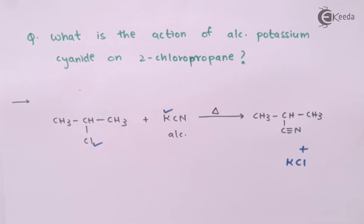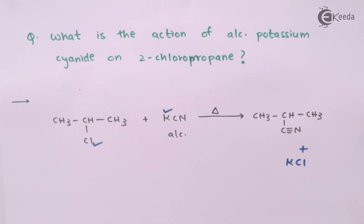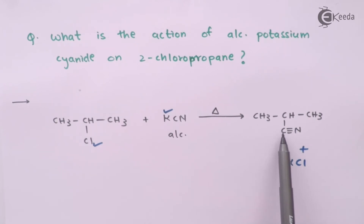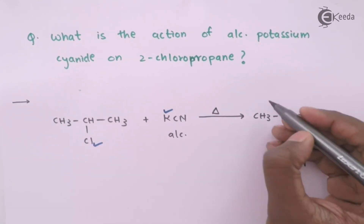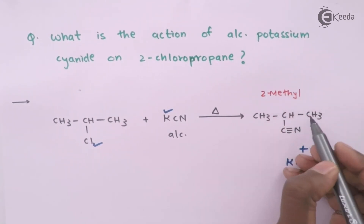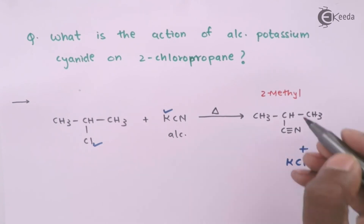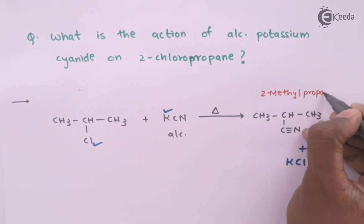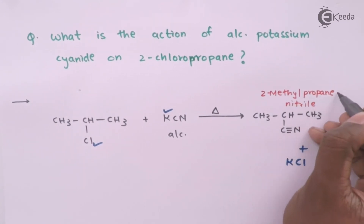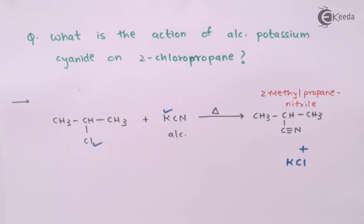Talking about the IUPAC name: according to the common name this is isopropyl cyanide, but we need the IUPAC name which includes the functional group — here the cyanide group. Numbering the carbons 1, 2, and 3: at carbon 2 a methyl group is present, so we call it 2-methyl. The total carbon chain has 3 carbons (propane), and because it is a cyanide group the suffix is nitrile. Therefore the IUPAC name is 2-methylpropanenitrile.